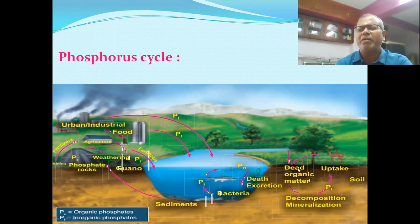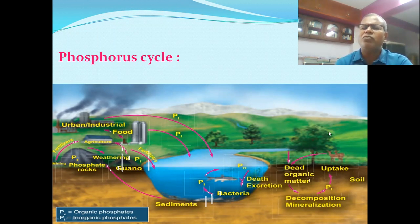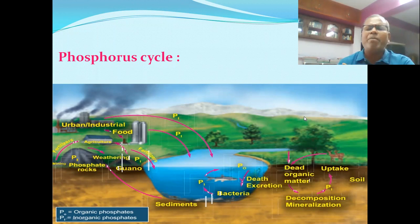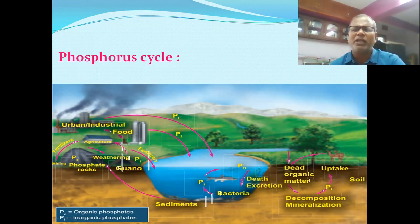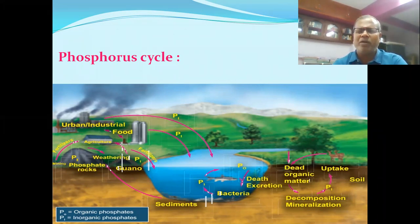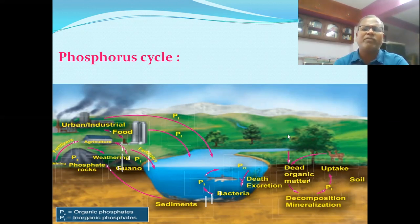Phosphorus is absorbed by the plants, transferred from plant to herbivore, herbivore to carnivore, omnivore, and up to the topmost trophic level including the human system. Eventually it is decomposed and converted once again into phosphorus. Thanks a lot for hearing. Thank you very much.